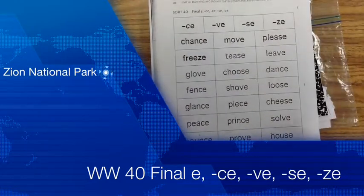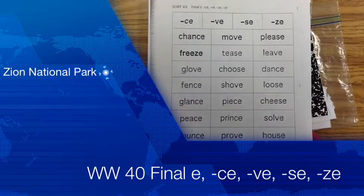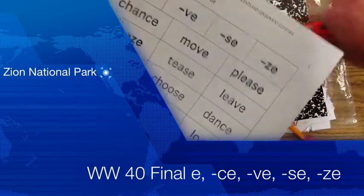And this is SORT 40. We're dealing with the final E. We have a C-E, a V-E, an S-E, and a Z-E. We'll get into the sounds in just a few minutes, but for now, let's go ahead and take a moment and let's cut out our exemplars and our word chips. Ready? Go!